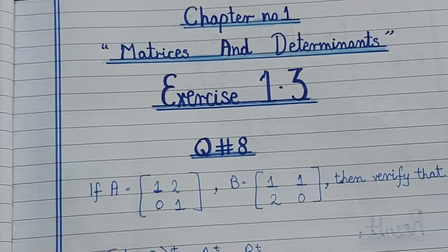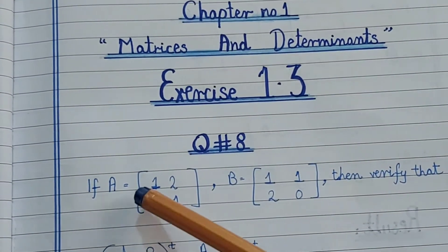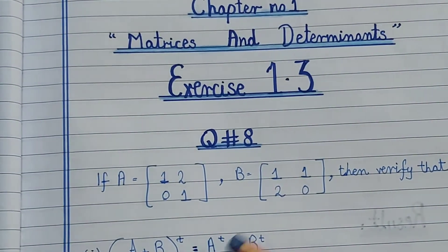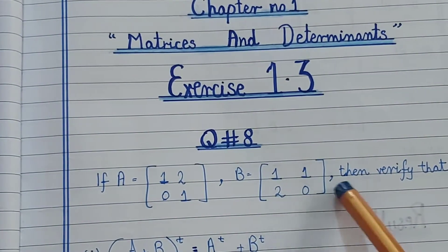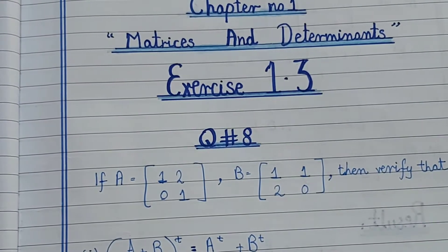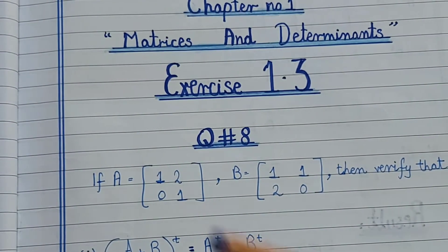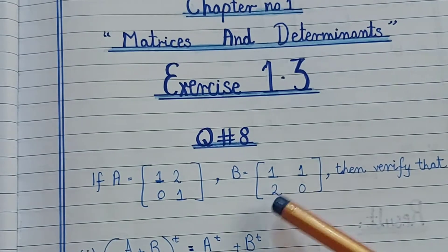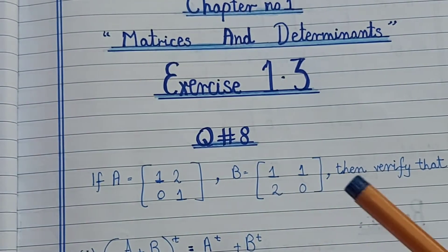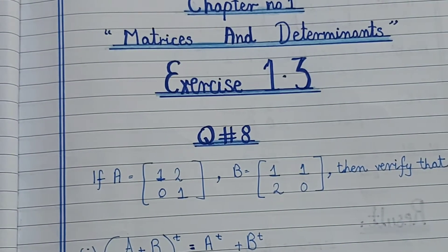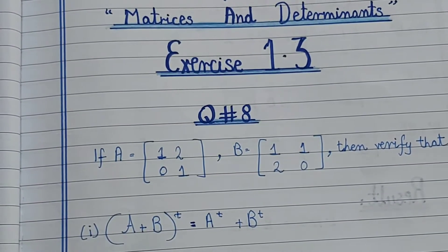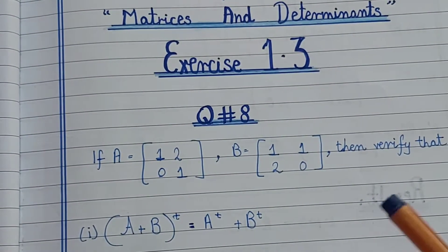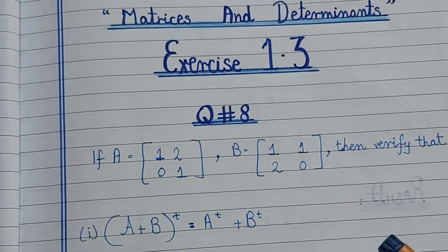Question 8 states: if A is equal to [1,2;0,1] and B is equal to [1,1;2,0], then verify the following. In this question we have matrix A and matrix B values given, and there are six parts to verify.